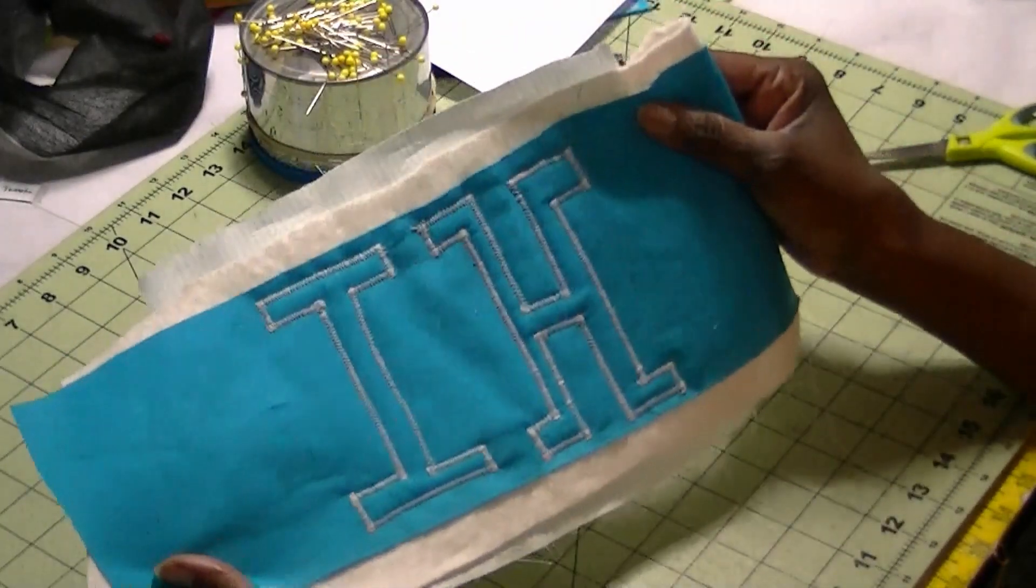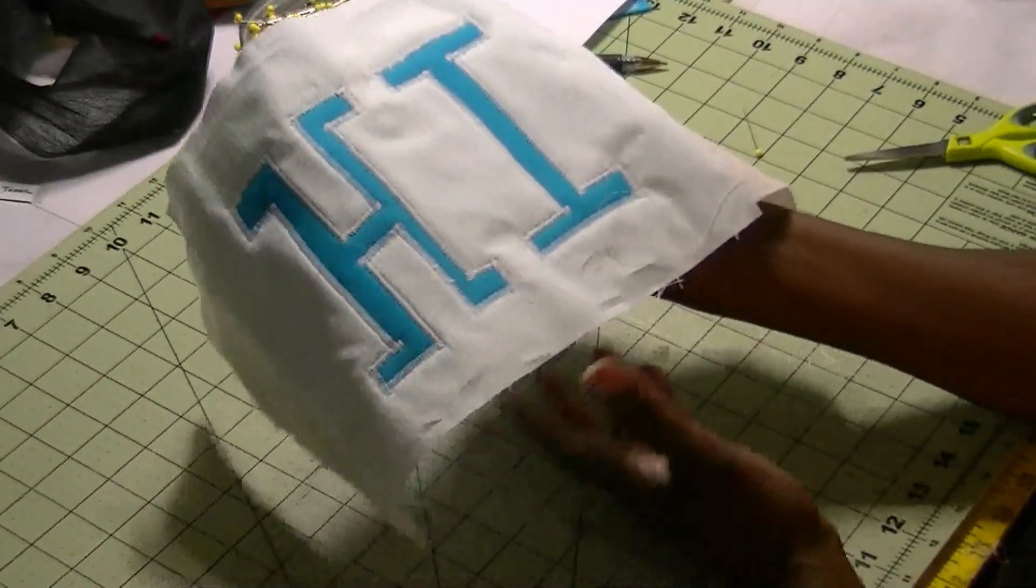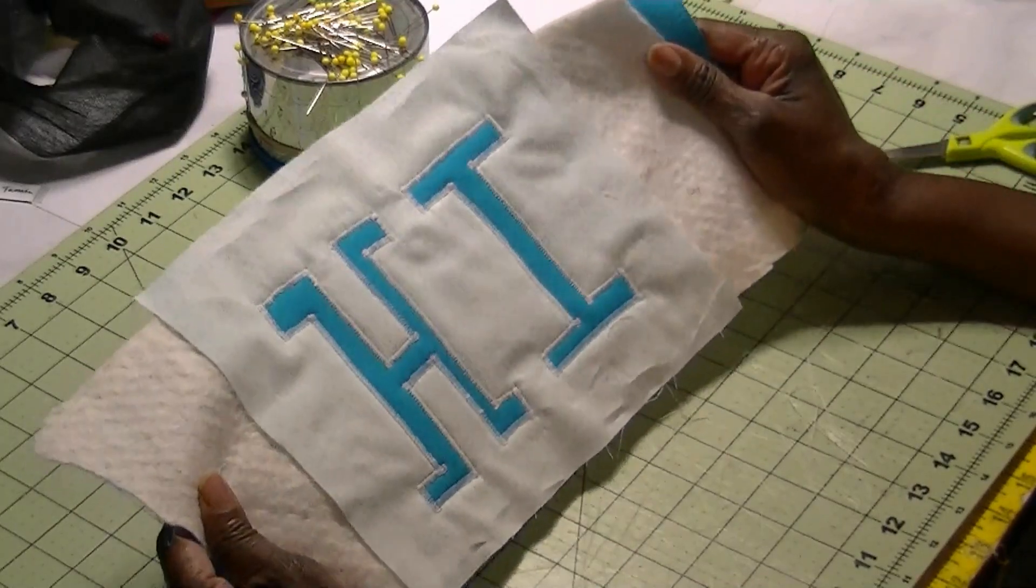And when you flip it over, you can really see how we embroidered it. And it looks really nice. So that's how simple and easy it is to make an applique.